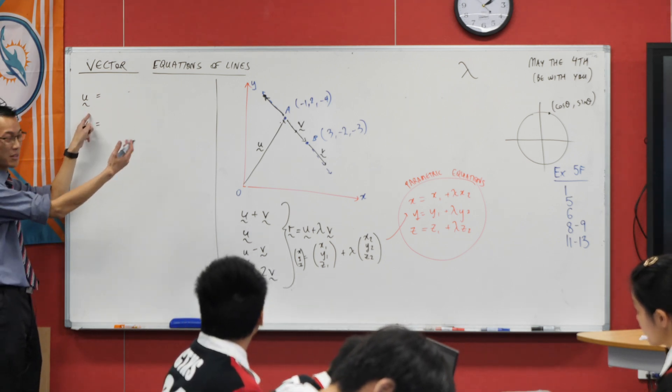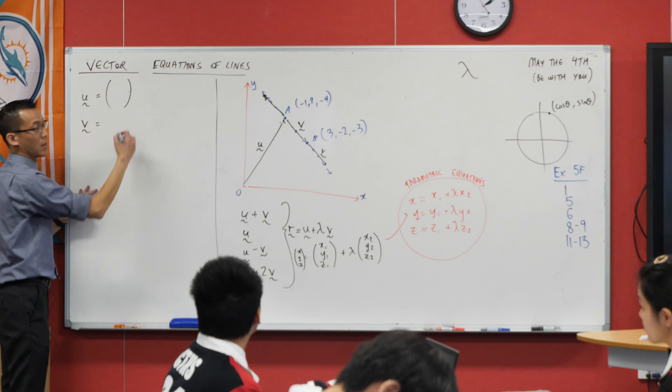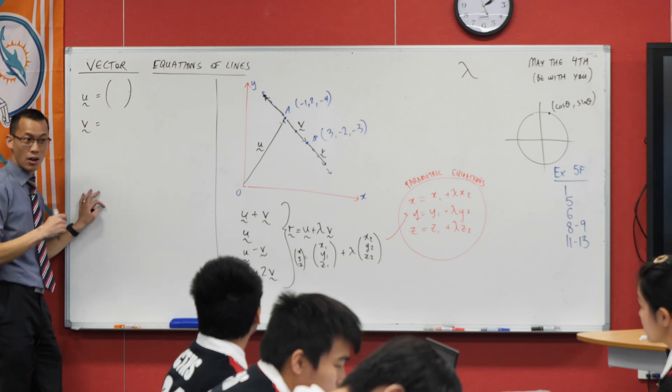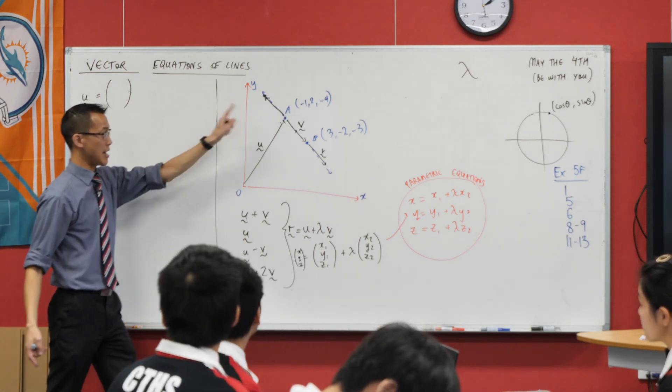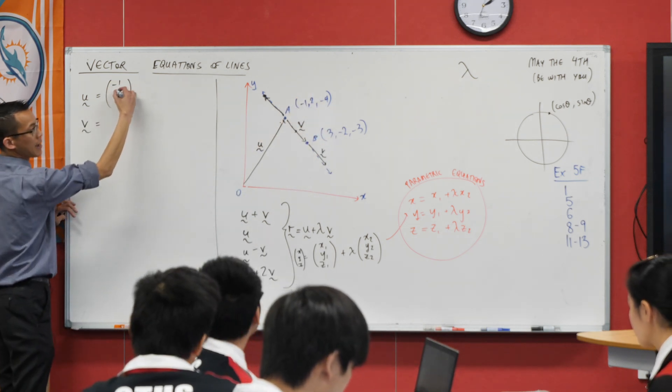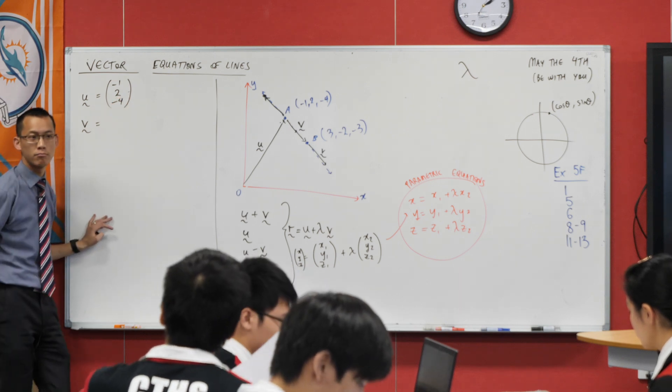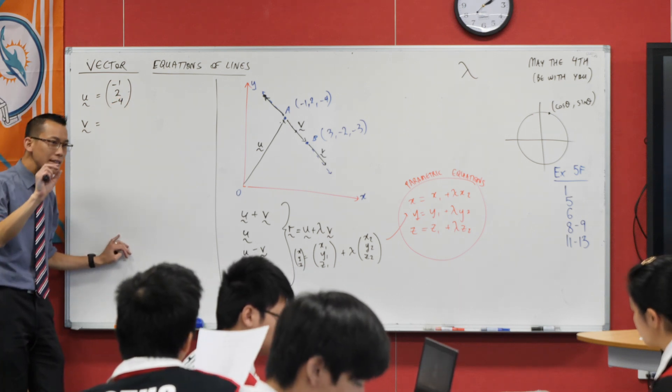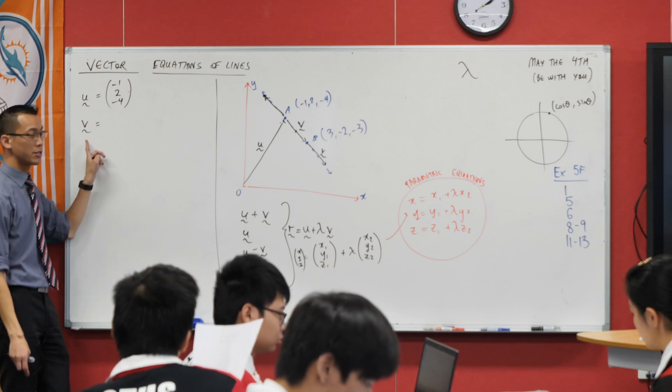In this case, because you've just been given the coordinates of A, it is not difficult to write the vector OA, which I'm labeling as little u. The x and the y and the z of this vector correspond to the x and the y and the z of the coordinates. So hopefully without too much trouble we were okay to write down this part here.